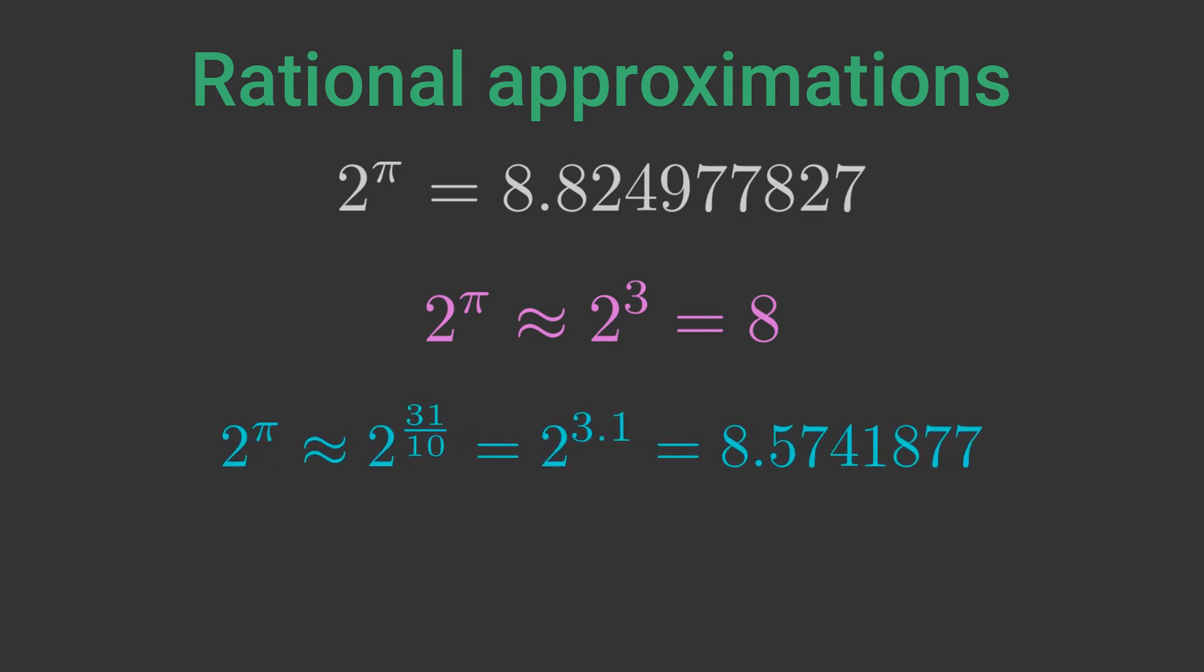A slightly better approximation would be 31 over 10. This is 3.1, which is π to one decimal place. Since this is a rational number we can calculate the value of 2 to the power 31 over 10. It is the 10th root of 2 to the power 31. This gives us a slightly better answer.